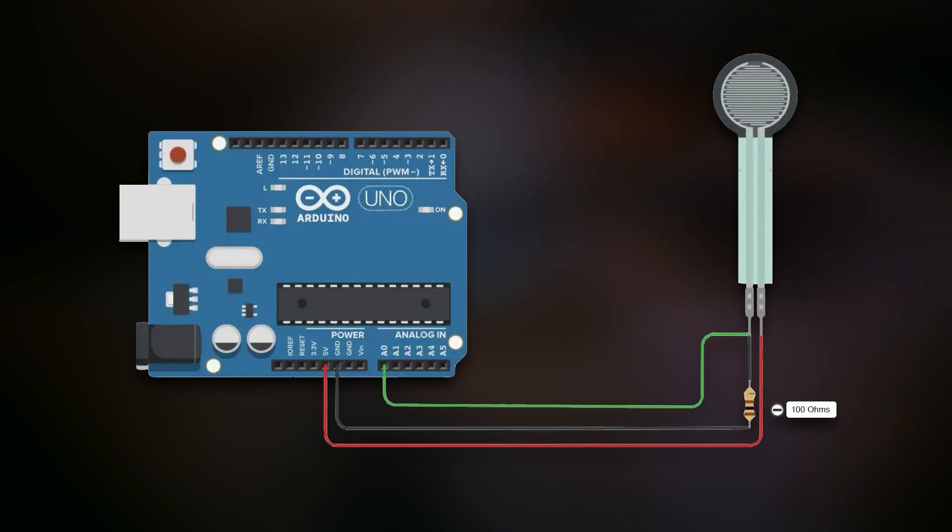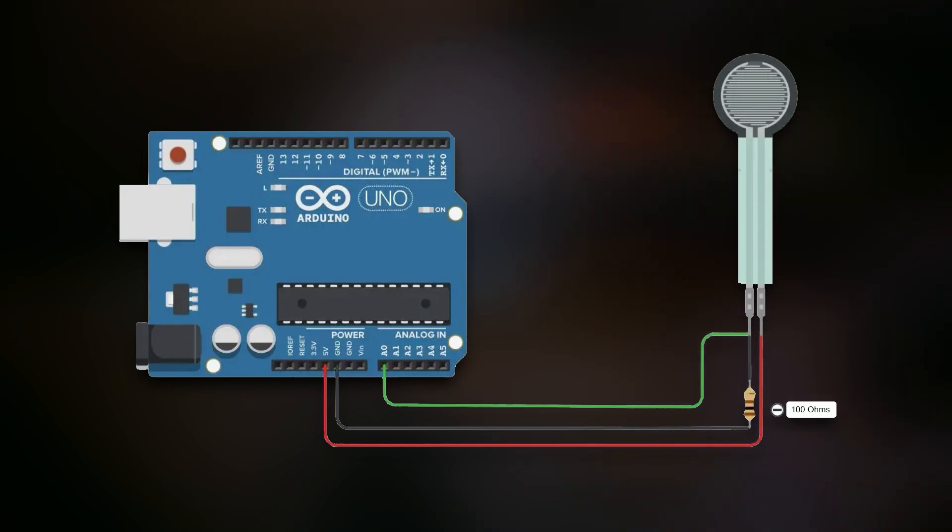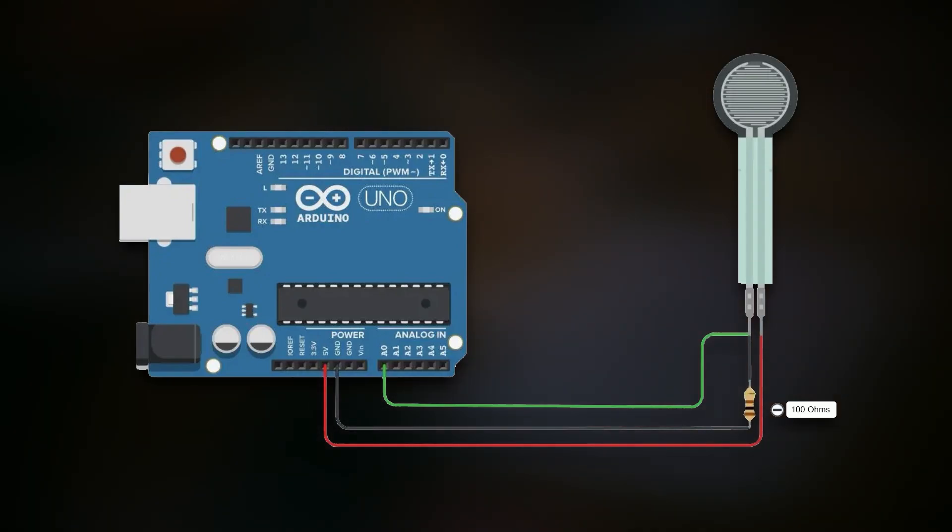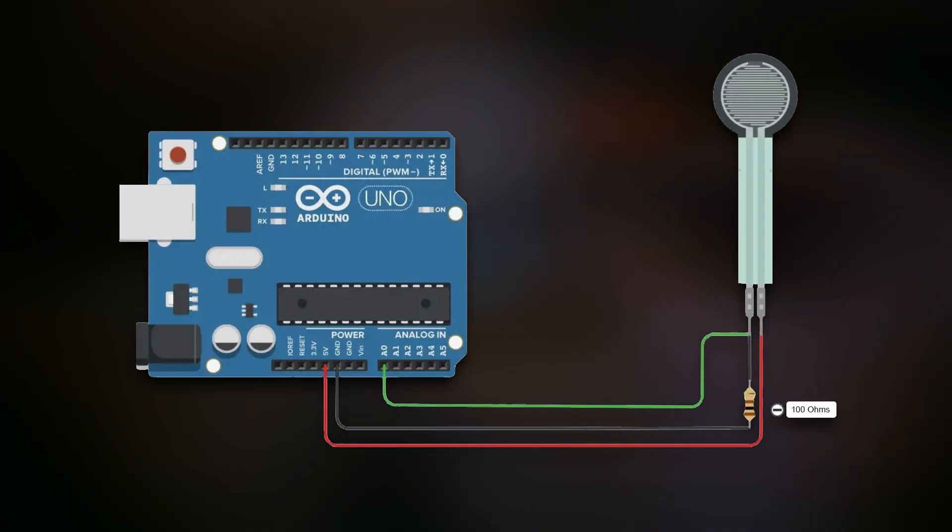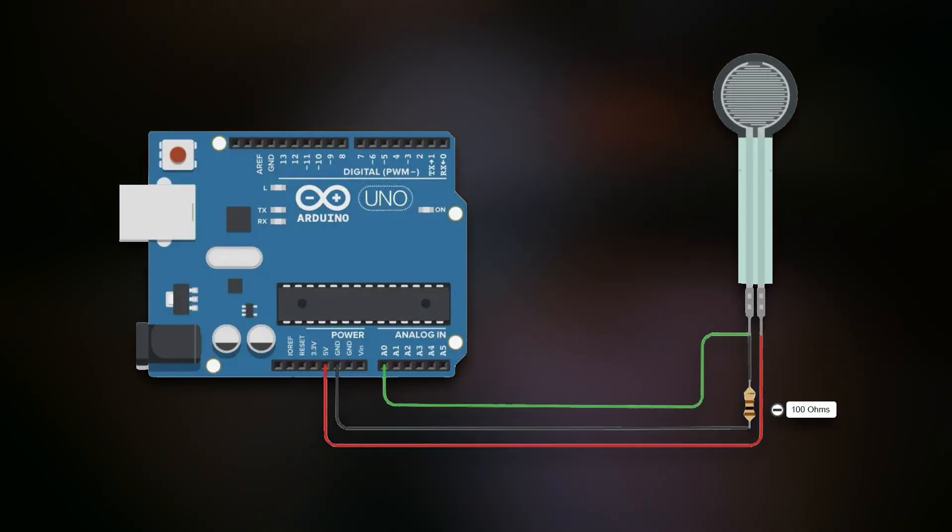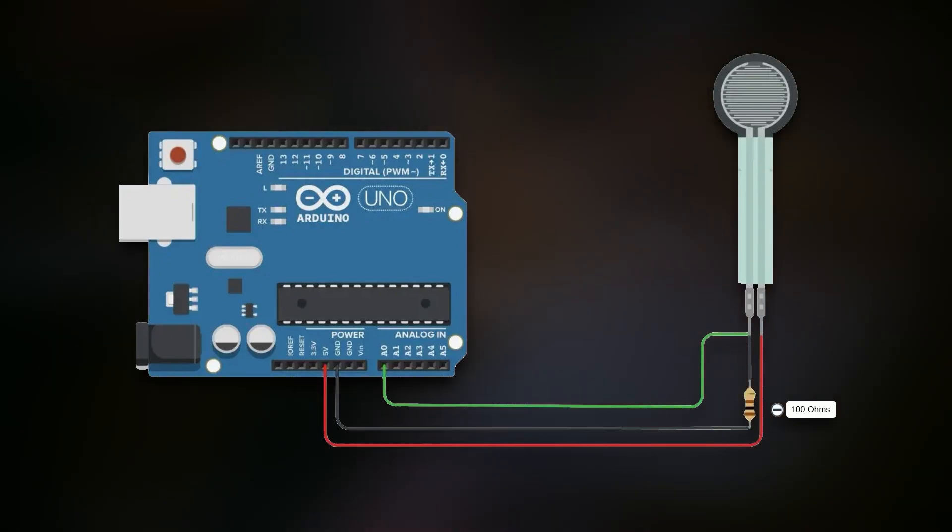The connection is looking like this: we have one wire connected to the 5 volts and the second one to the ground through a resistor, and right between the FSR and resistor we are connecting another wire which is going to receive the analog input from this resistor.